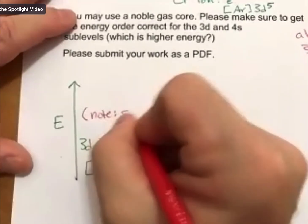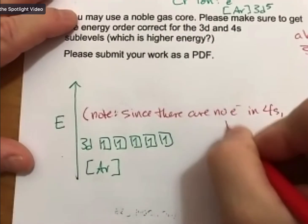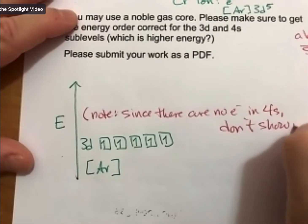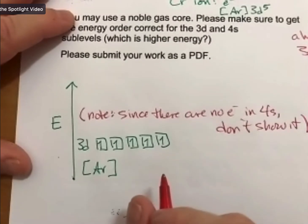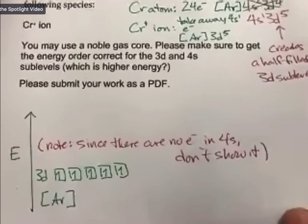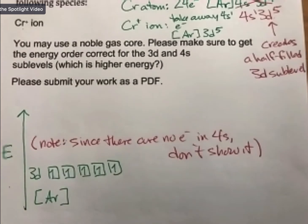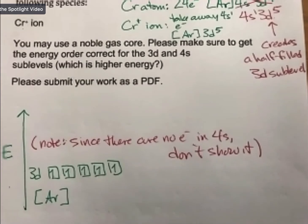Since there are no electrons in 4S, don't show it. I've shown two of the exceptions for the tutorial videos for the homework. You are more likely not going to see exceptions when you do it, but I just wanted to cover how to deal with exceptions. Hopefully that's the more complicated case, and the ones that follow the shape of the periodic table will be simpler.